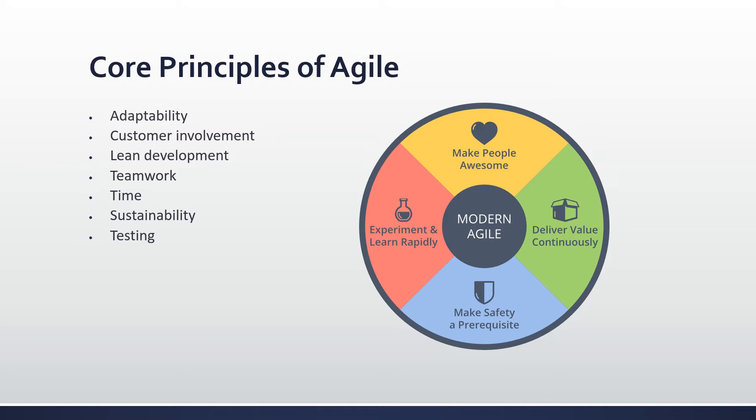Teamwork: agile values teamwork above everything else. Teams must continually assess how they become more effective and adjust the agile project as they go. Extreme programming insists that developers work in pairs on the principle that two heads are better than one. Time: agile development breaks projects into very small units of time called time-boxed sprints.